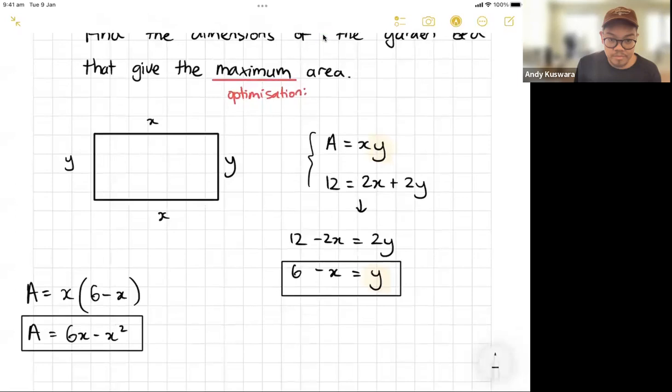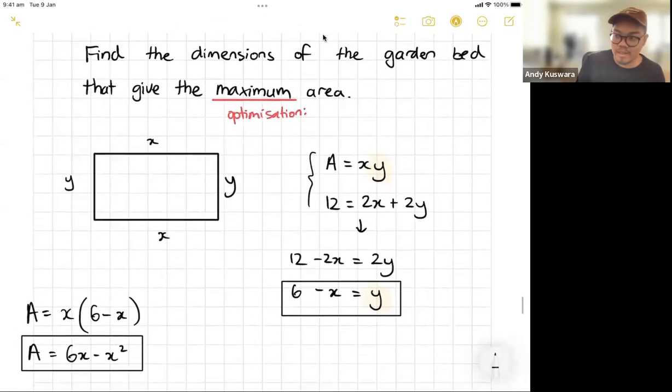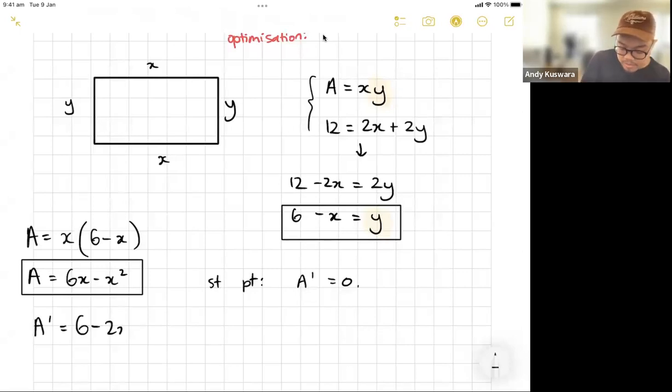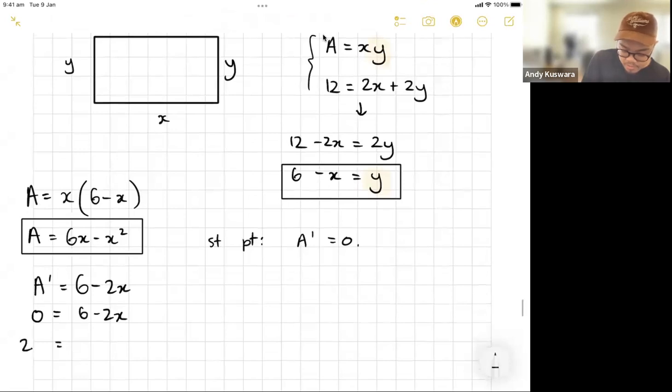Now that I've got this, now I'm up to this, all this was part one. Part two is now let's treat it like a maximization or minimization question. I'm going to find the stationary points and I'm going to determine their nature. So for stationary points I'm going to let A dash equal to zero. So A dash, let's derive it, becomes 6 take away 2x. Let it equal to zero. So zero equals 6 take away 2x, and then solving here 2x equals 6 and I can see here that x will equal to 3.